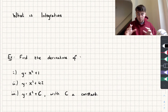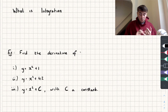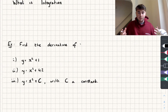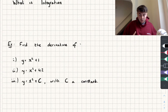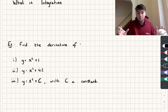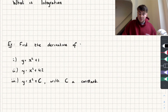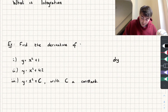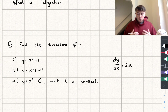Let's take a look at some examples of derivatives to give us some context. We've got y = x² + 1, y = x² + 42, and y = x² + c. The derivative of the first one is just 2x, the derivative of the second one is also 2x, and for the third one a constant goes to zero, so its derivative is also 2x. All three equations have a derivative dy/dx of 2x.